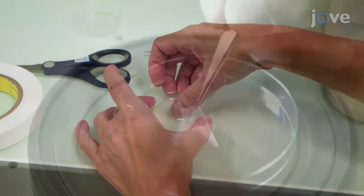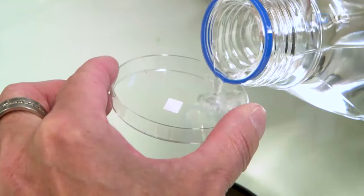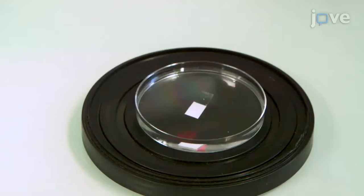To begin, place a piece of double-sided tape into the center of a 5 cm diameter petri dish. Add a sample of gynoecium that has been isolated from a flower bud to the tape. Rapidly add water to the dish until the sample is completely covered so as to avoid dehydration.